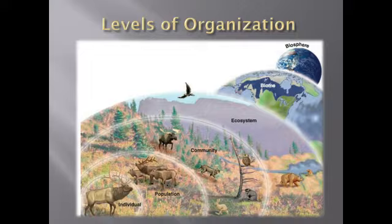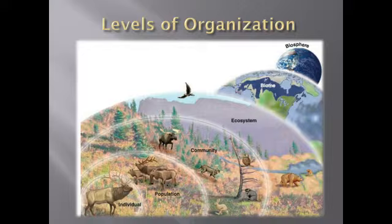The next level is the population — a group of organisms of the same species in an area. For example, elk or caribou that are all the same species make up a population. Another good example: the humans in Riyadh are all the same species, so we're essentially a population.